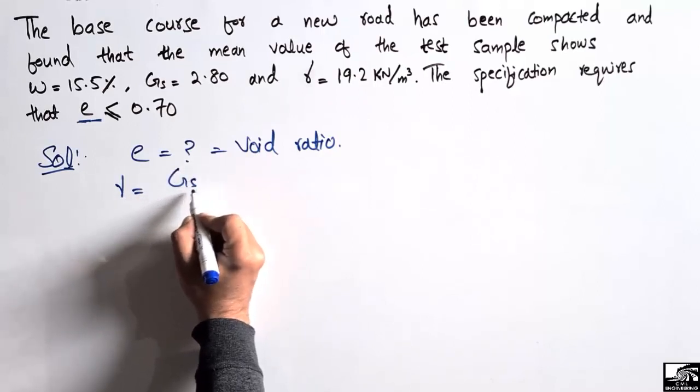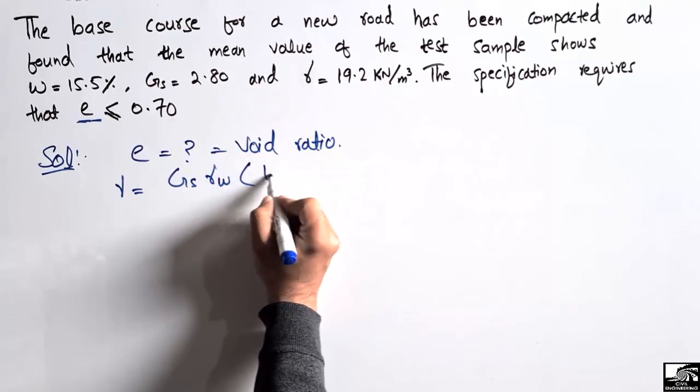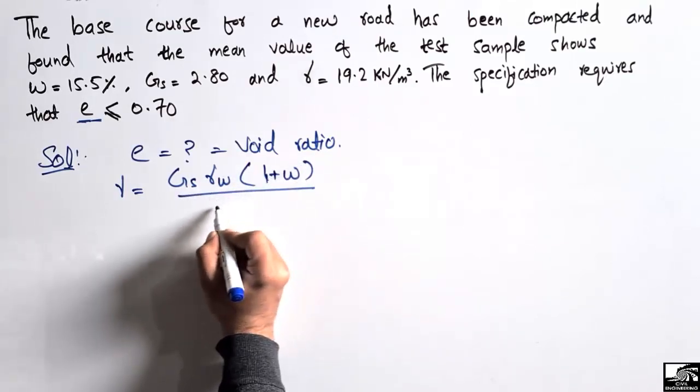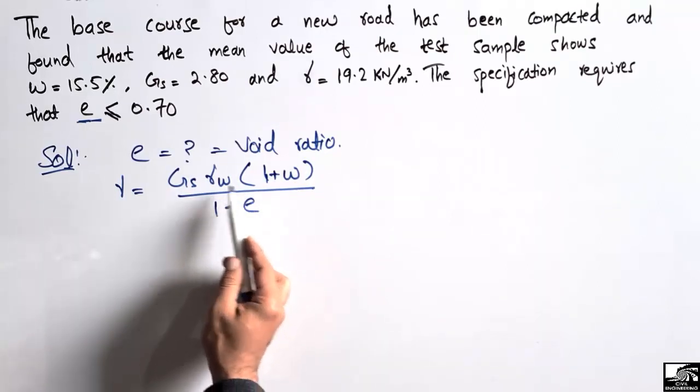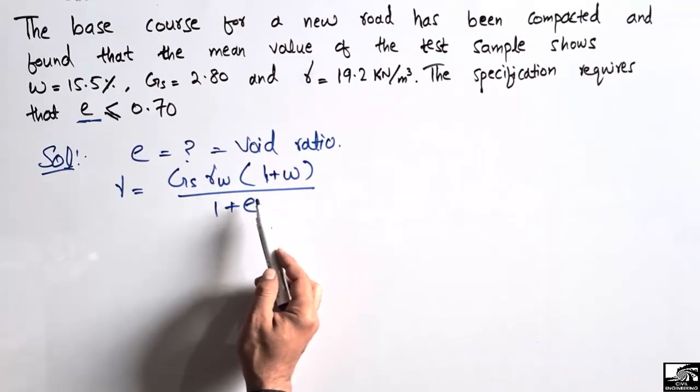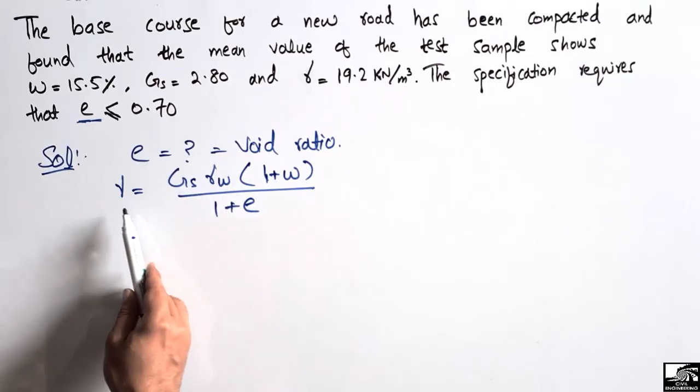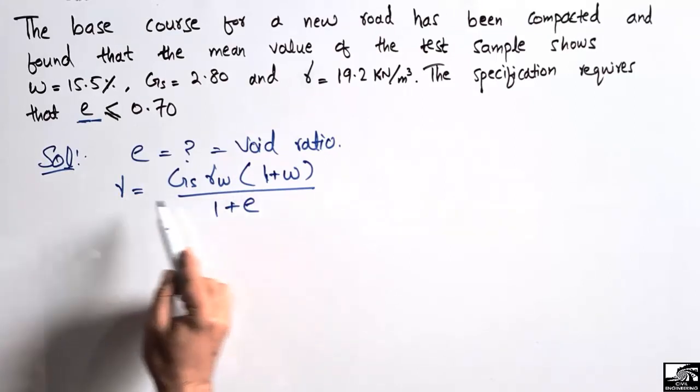One of the equations used in soil mechanics is that the unit weight is equal to the specific gravity of the soil times the unit weight of water times (1 plus water content) divided by (1 plus void ratio). Mostly values are given to us in this equation.